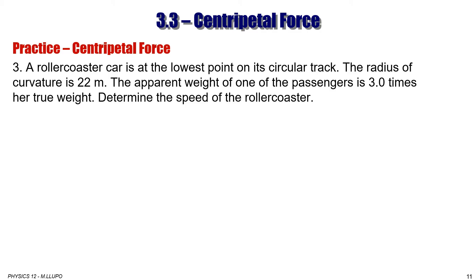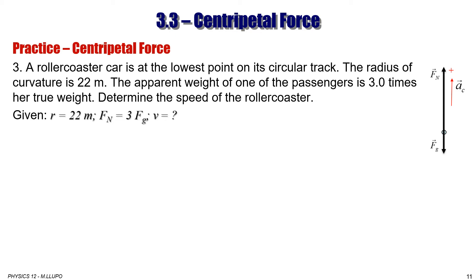Here are some more practice problems. A roller coaster car is at the lowest point on its circular track. The radius of curvature is 22 meters. The apparent weight of one of the passengers is three times her true weight. Determine the speed of the roller coaster. We have radius = 22 m and normal force = 3 times the force of gravity. We draw a free body diagram with force of gravity and normal force — normal force is longer because it is three times bigger. Centripetal acceleration points upward because the passenger is at the lowest point of the curvature, so the center is above.